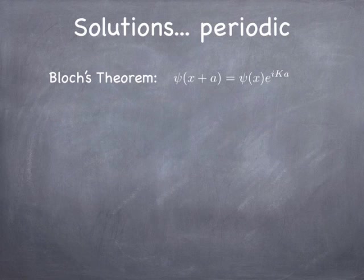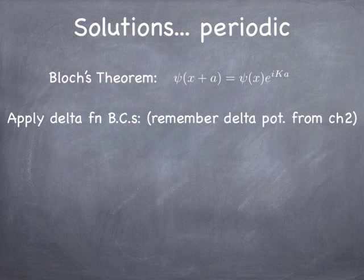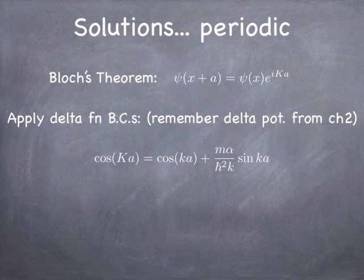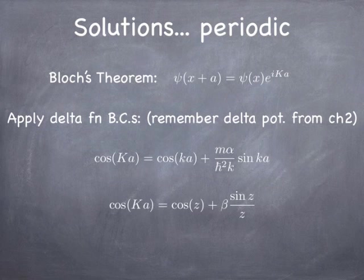The crystal momentum K is produced by solving a transcendental equation. Applying the boundary conditions at the delta function, just as in Chapter 2, gives an equation where if you tell me K, I can solve for little k, or vice versa. This gives a relationship between crystal momentum K and the wave vector k. Griffiths parameterizes these by defining Z = ka and β = mαa/ℏ². Beta is a measure of the potential strength times the crystal spacing — a strength-geometry parameter — and Z is related to the energy.